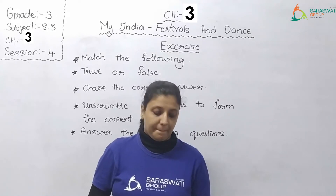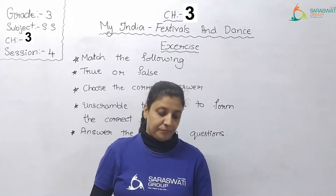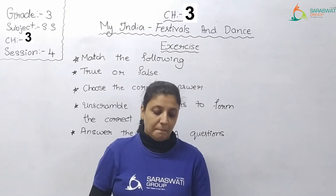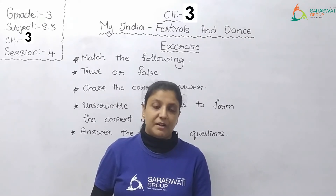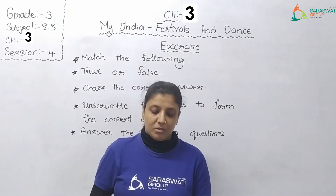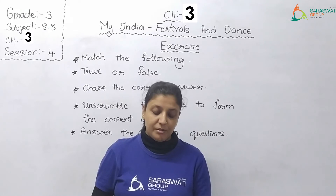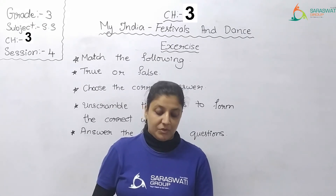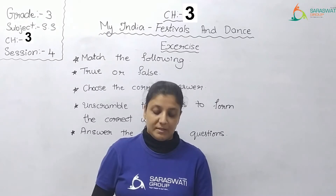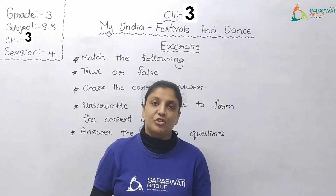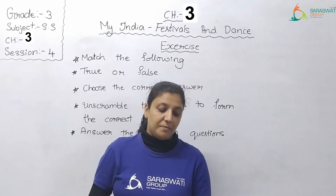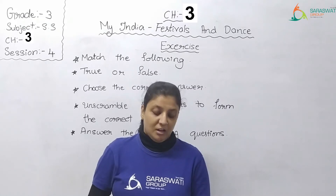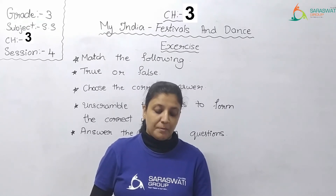Question number 1: Match the following. Let me read Column A for you. A. Giddha, B. Garba, C. Ghumar, D. Lavni, E. Chau. Now Column B: 1. Maharashtra, 2. Rajasthan, 3. Punjab, 4. Odisha, 5. Gujarat. Now let's see the answers. Column A, Option A: Giddha — answer is Column B, Option 3: Punjab, because Giddha is a dance from Punjab.